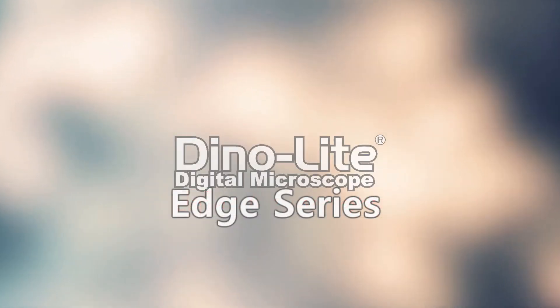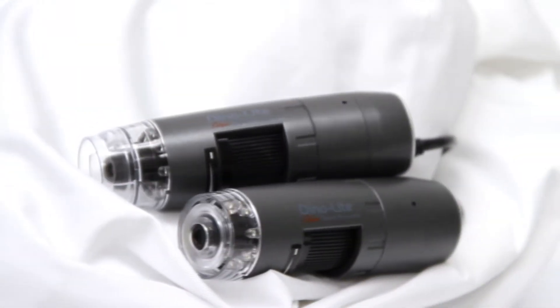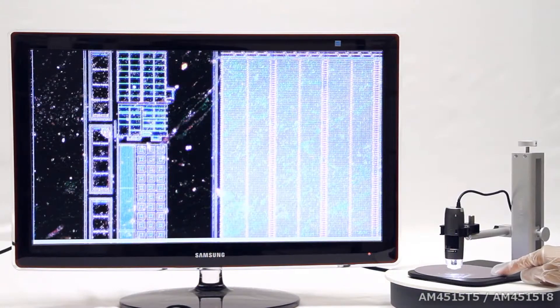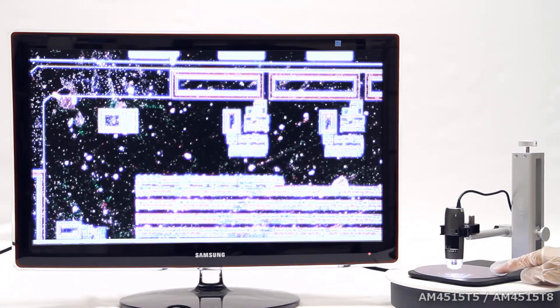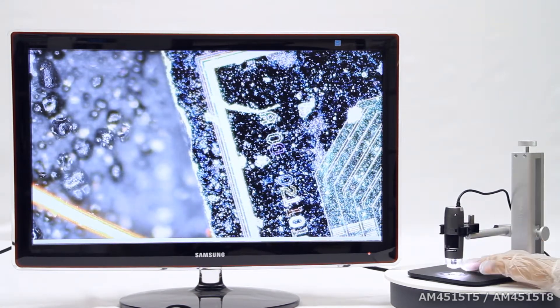Introducing the Dynalight Edge Series 4515 T5 and AM4515 T8. Both of these models feature the Edge Series sensor with improved sharpness, color, and image quality.